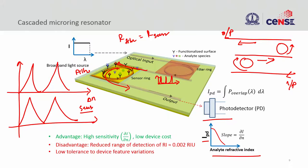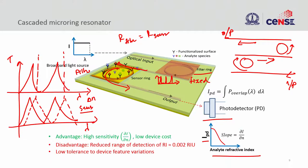When they no longer align, look at the output current it will produce. When they are on top of each other, all the light from the filter ring goes through the sensor ring and you have maximum light. When the sensor ring starts moving, the overlap is reduced. When the overlap is reduced, the current you measure also goes down. This is how you convert spectral information into a simple current measurement. The optical power is now related to delta_lambda — the sensor ring resonance position. This is our goal: a broadband source and a single photodetector measuring just a current.